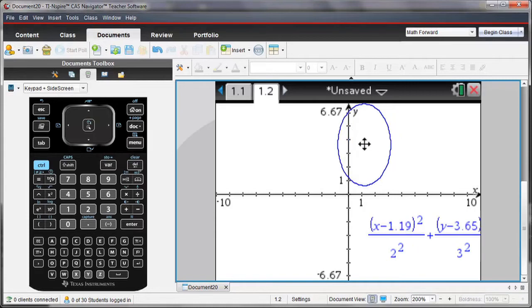I can pick up the ellipse and move it along the graph, and notice that as I do that, the values of the equation change.